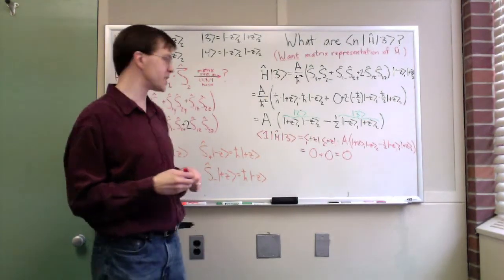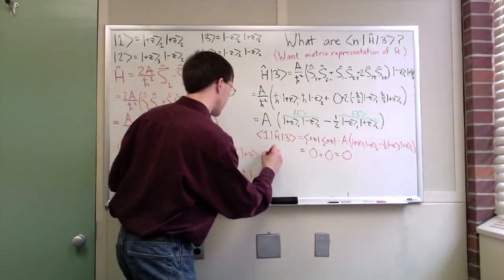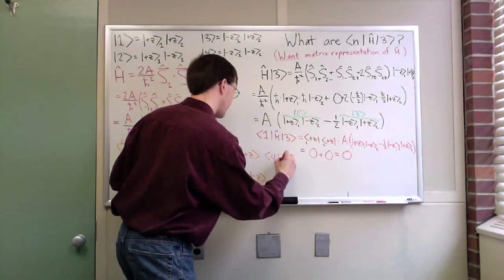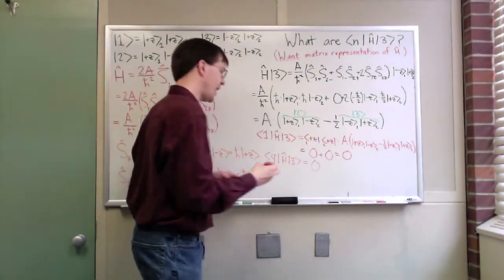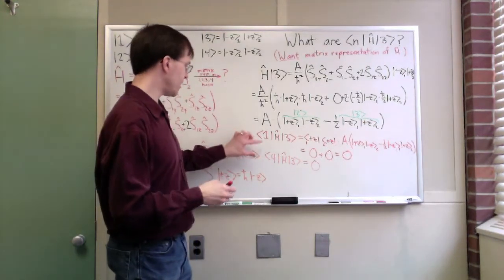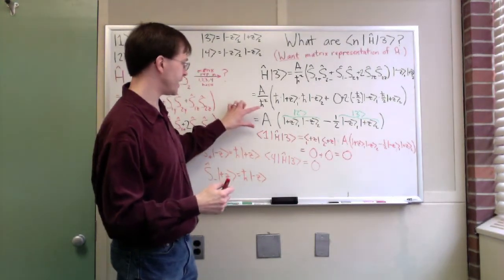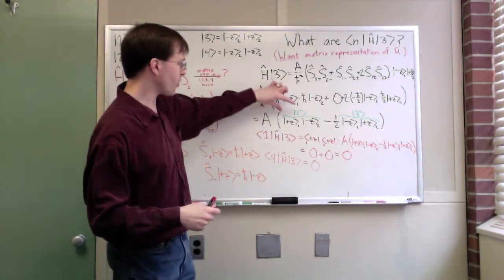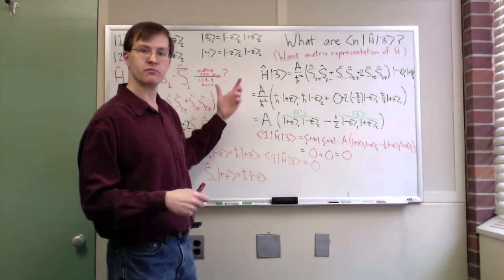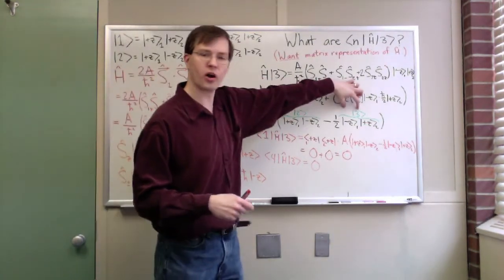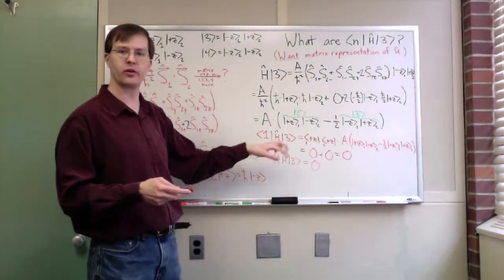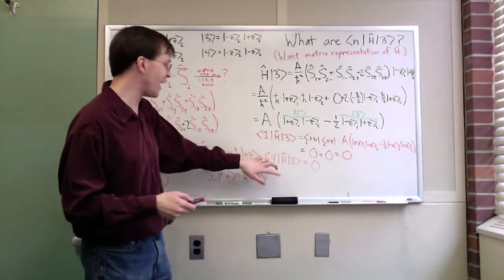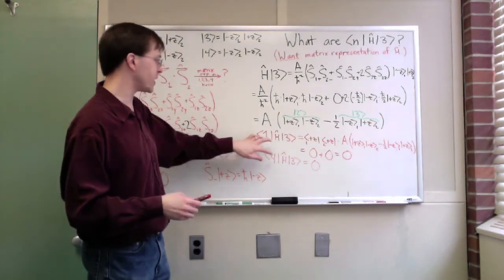So right away we can see 1 h hat 3 will give us 0. While I'm at it, since this is the quick and easy one, I'll also point out that state 4 h hat with 3 equals 0. If I take the state 4 bra in here and pull it in, 4 into 2 are orthogonal states, 0. 4 into 3 are orthogonal states, 0. In class we saw that those were orthogonal, so we know that 1 and 4 each give us 0.